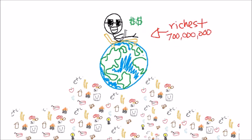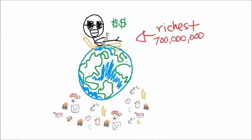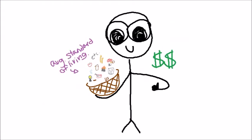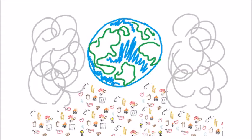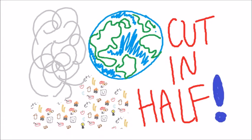On the other hand, if the richest 700 million people on Earth pulled it with overconsumption and instead took only what is necessary for the average global standard of living, resource depletion and pollution would be cut in half.